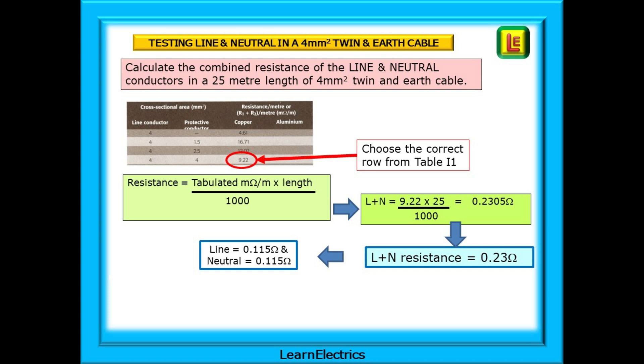And the calculator tells us that this is 0.2305 ohms. We can say, after rounding, that the line plus neutral resistance is 0.23 ohms. We might need to check the resistance of just the line conductor in this radial circuit. Our meter leads will not reach to both ends to measure end to end, so we can link the line and neutral at the one end as shown and then test at the other. As both conductors are the same size, we just halve the answer to find the resistance of the line conductor on its own. If L plus N is 0.23 ohms, then the line is 0.115 ohms on its own.